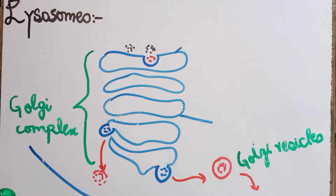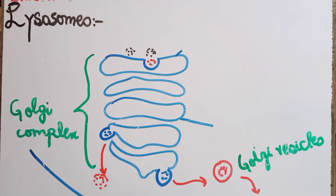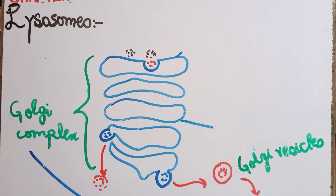Lysosomes were first of all discovered by a scientist named Christian de Duve in the mid 20th century, a Belgian scientist who first discovered lysosomes.